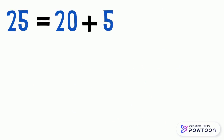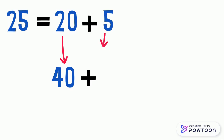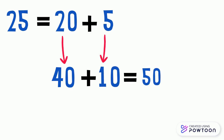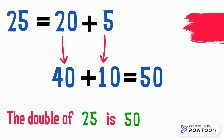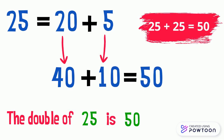Now we will calculate the double of 25. The number 25 is equal to 20 plus 5. To find the double, we should find the double of 20 and the double of 5. The double of 25 is 40 and the double of 5 is 10. 40 plus 10 equals 50. So the double of 25 is 50: 25 plus 25 equals 50.